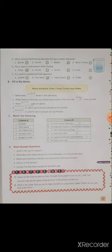Now short answer questions. What is the use of beaker? I have already given the answer after this video. Beaker is used for mixing, measuring and pouring liquid chemicals. It is also used for stirring and heating chemicals. Write down the safety precautions to be followed in a chemical laboratory. It is given in page 15, that is the safety regulation. Name some building materials manufactured by chemical process. It is given after this page. What is the first aid box? That is also written after this page. List any five laboratory equipment and their uses. That is also given.